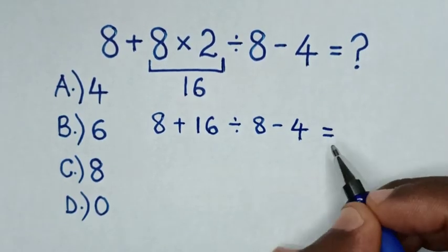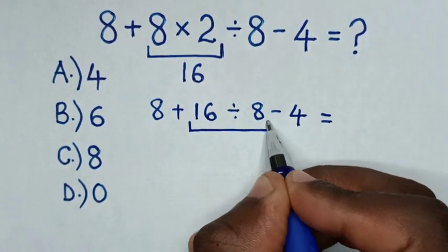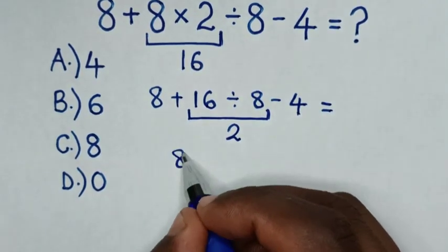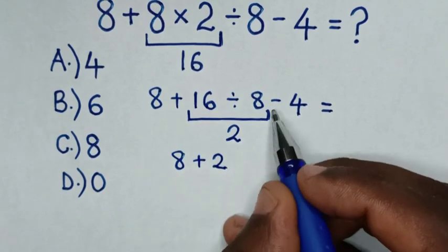Then we deal with the division: 16 divided by 8 is 2. Then it will be 8 plus 2 minus 4.